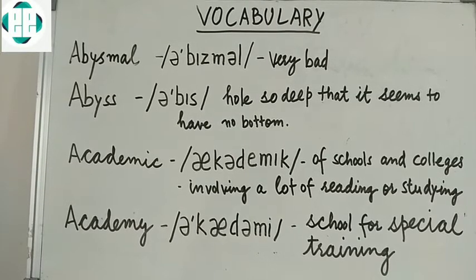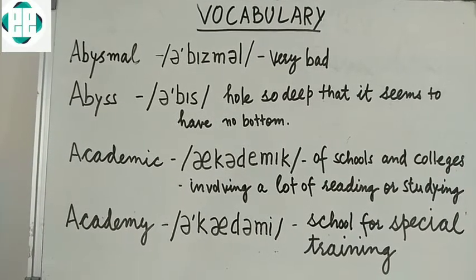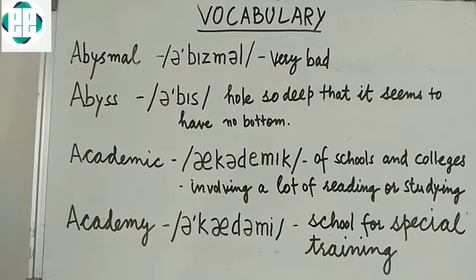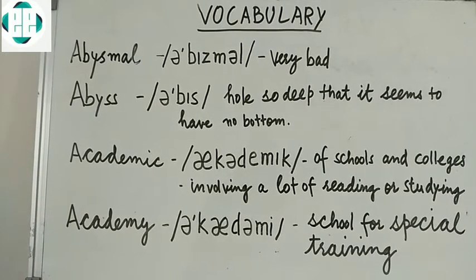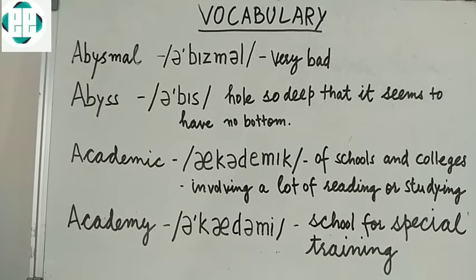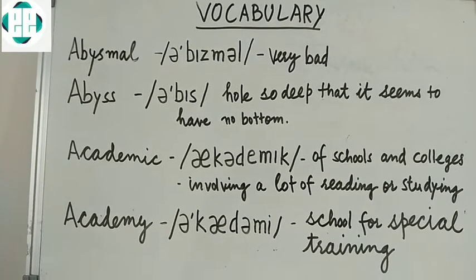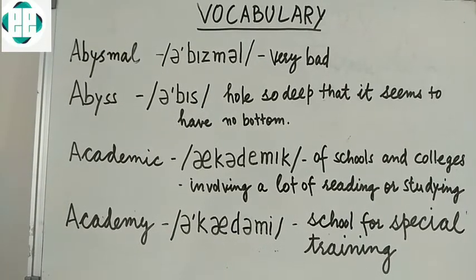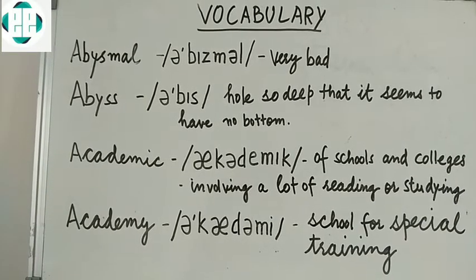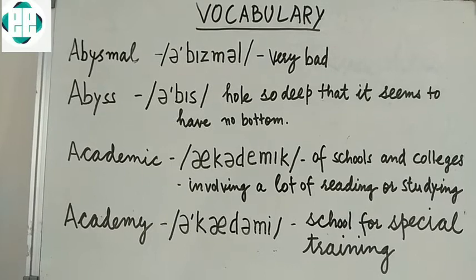The second meaning of 'academic' is involving a lot of reading or studying. The next one is 'academy.' Academy means a school for special training.